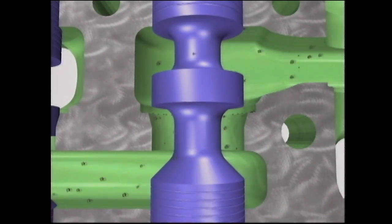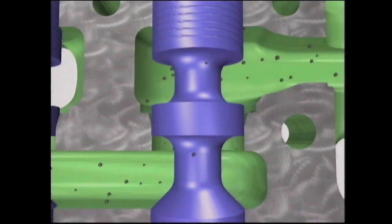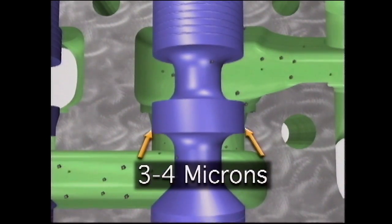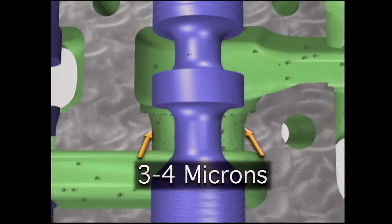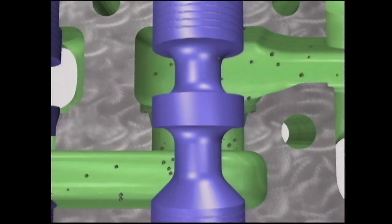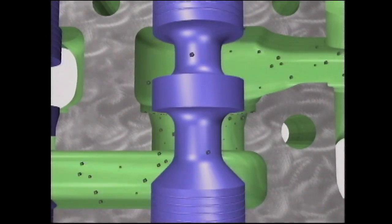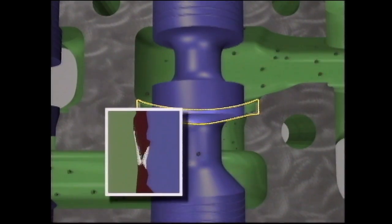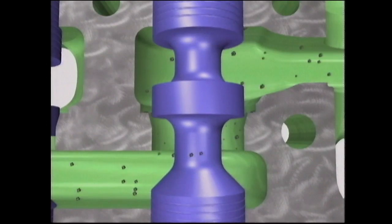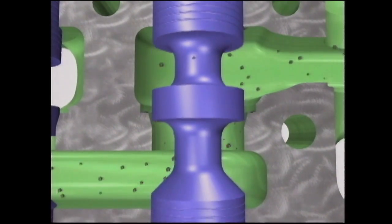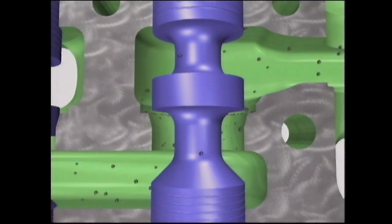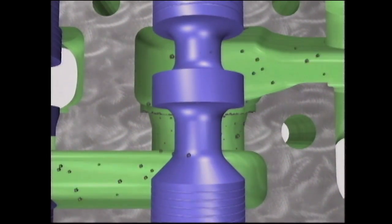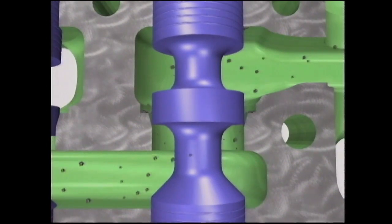Electrohydraulic valves are more susceptible to contaminant damage because the clearances are even smaller — as small as 3 to 4 microns. Some of the particles naturally adhere to the imperfections in the wall or because of the electromagnetic conditions in the valve. This buildup or siltation can either slow the spool causing sluggishness, or make the spool hesitate, causing jerkiness in the system. Over time, the contaminants can cause wear on the spool that results in leakage, and sometimes a large particle can become lodged and block the motion in the valve.